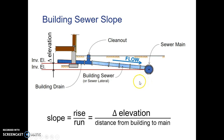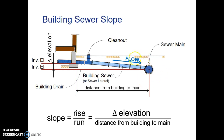Slope is simply rise over run. When applied to a sewer lateral, the rise is the distance the pipe drops — the difference in elevation between where it leaves the house and where it connects to the sewer main. The invert elevation is the elevation of the inside bottom of the pipe where the water flows. So we have the distance from the building to the main, with the invert elevation at the high point, sloping down to the low point at the sewer main.